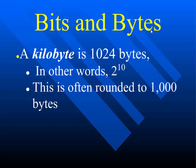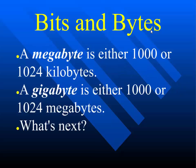Next up is megabytes — that's 1,024 kilobytes, about a million bytes. A gigabyte is 1,024 megabytes, giving you about a billion. A terabyte is a trillion, and a petabyte is a quadrillion, though we haven't reached that size yet.